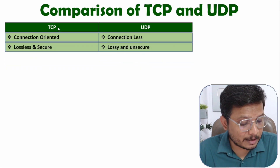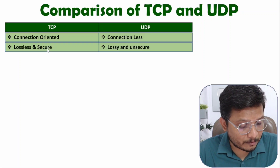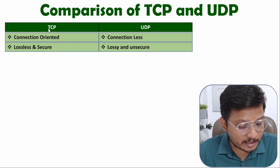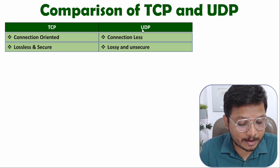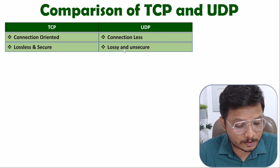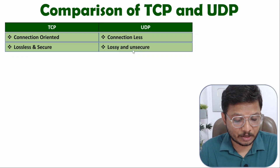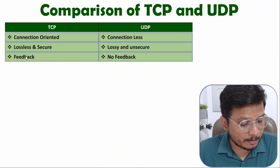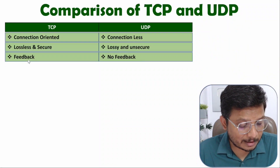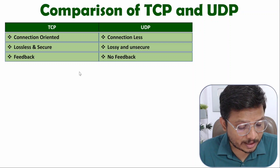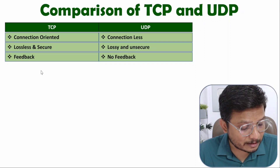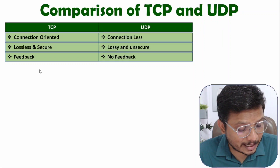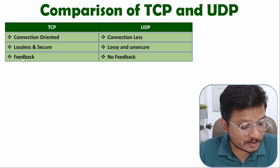TCP connection is lossless and secure because if data is lost, a resend process is performed. UDP is lossy and unsecure because there is no resend process when data is lost. With TCP, a feedback operation is performed — after the receiver gets data, it sends an acknowledgement to the transmitter indicating whether the received data is proper or not.